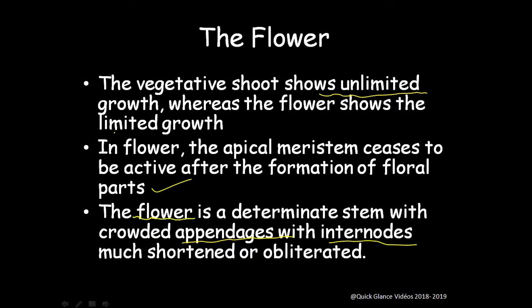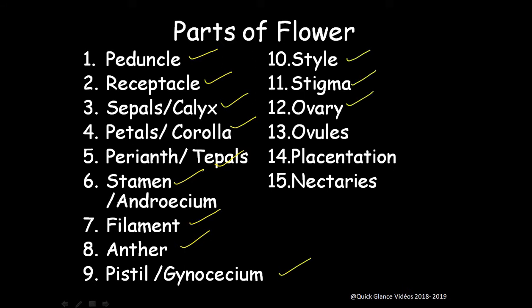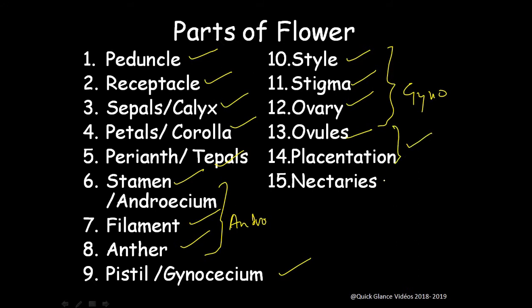Now we will come to the parts of the flower. We will be covering 15 parts: pedicel, receptacle, sepals or calyx, petals or corolla, perianth or tepals, stamen or androecium, filament, anther, pistil or gynoecium, style, stigma, ovary, ovules — all forming part of the gynoecium — and also placentation and nectaries.